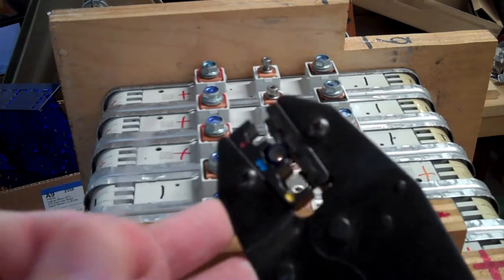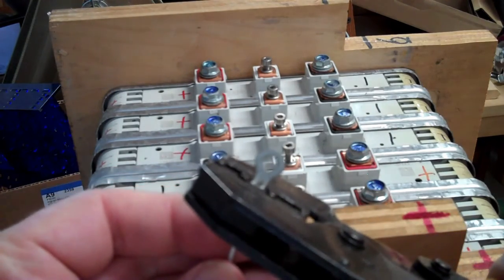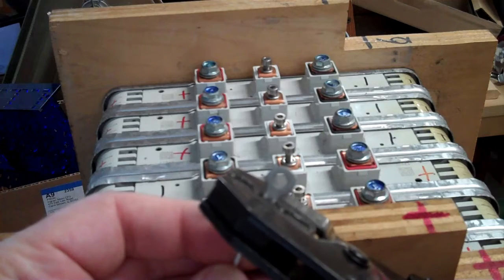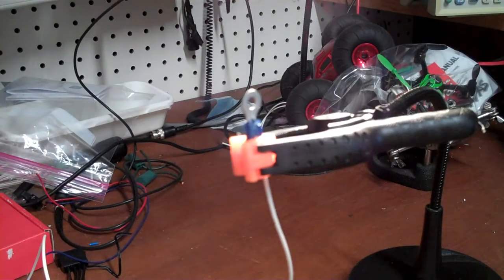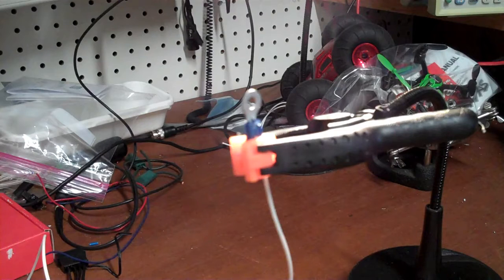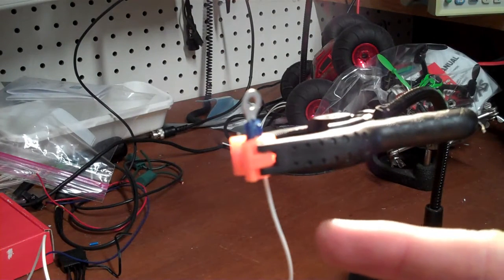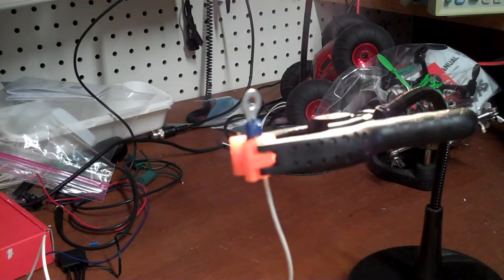I like putting the terminal in the crimpers so that I can then use that to hold the terminal while I put the wire in. Now, you're never supposed to solder a crimp terminal because the solder may go down the strands of the wire and make them brittle and make them break off at the back end.